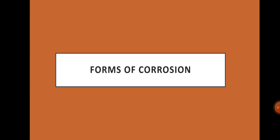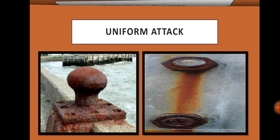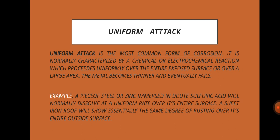Forms of corrosion — Uniform attack: uniform attack is the most common form of corrosion. It is normally characterized by a chemical or electrochemical reaction which proceeds uniformly over the entire exposed surface or over a large area. The metal becomes thinner and eventually fails. For example, a piece of steel or zinc immersed in dilute sulfuric acid will normally dissolve at a uniform rate over its entire surface. Uniform attack or general overall corrosion represents the greatest destruction of metals.